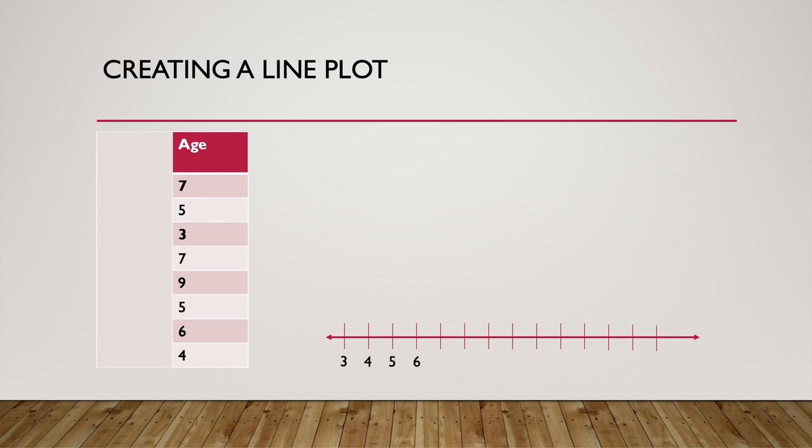And let's put some numbers. Five, six, seven, eight, nine. Perfect. So now we have all the ages represented on our line. We started with the lowest number, the lowest age we had, which was three. And we went up to the highest age we had and that was nine.